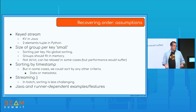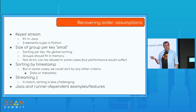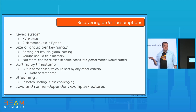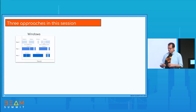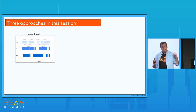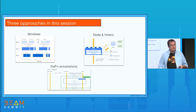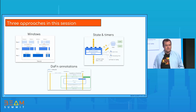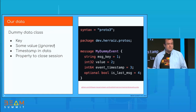The last assumption: this is streaming, and sorting is hard in streaming. Sorting in batch, as I said, is kind of solved. All the examples here are going to be written in Java, and some of the features we're going to discuss are not available yet in every runner. We're going to be discussing Dataflow, Flink, and Spark mainly. We're going to use three different approaches: windowing, state and timers, and runner-specific DoFn annotations that will sort things for us.